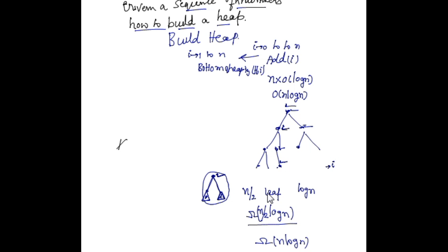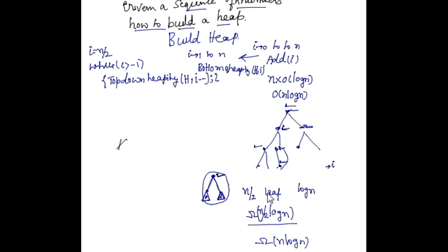From this node I call the top-down heapify so that this particular tree satisfies the heap property. Next I come to the previous node and call top-down heapify, going in the reverse direction. If I have to write the code, the first n/2 numbers will not do anything. For the remaining n/2 numbers, while i is greater than minus one, we call top-down heapify with the heap and parameter i, then reduce the index i in each iteration.